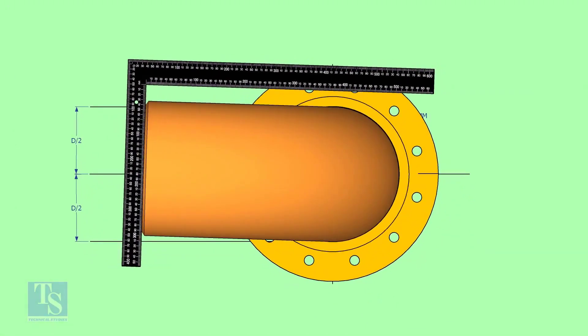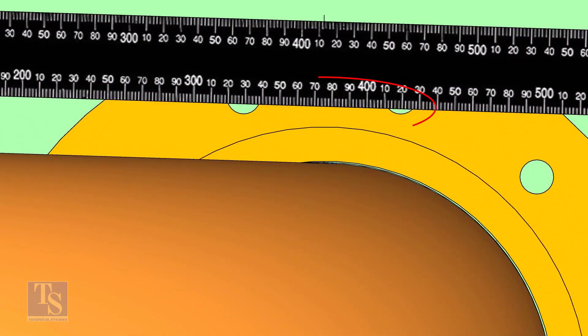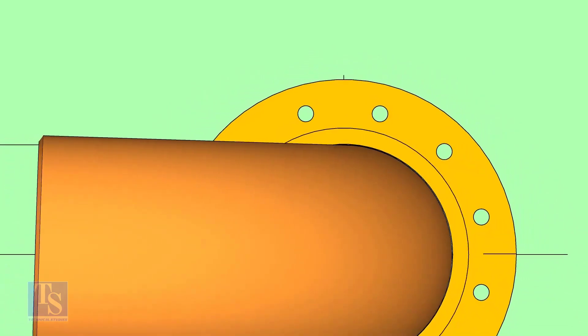Hold a right angle as shown and check if the reducer is turned. In this case, the elbow centerline is not parallel with the centerline of the flange.